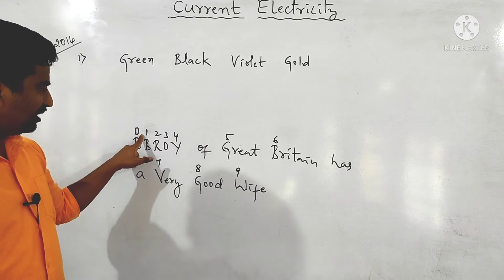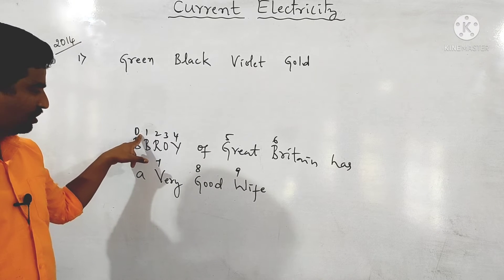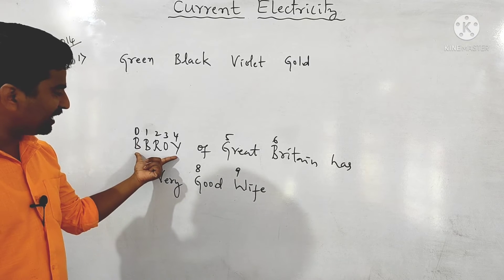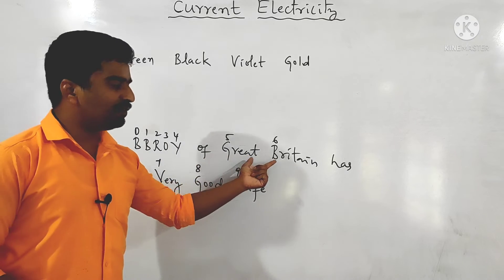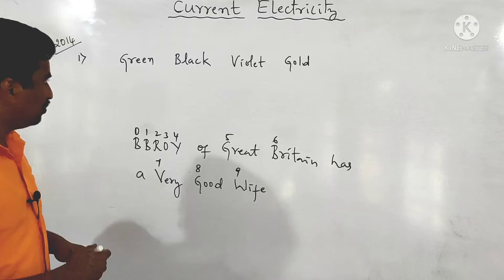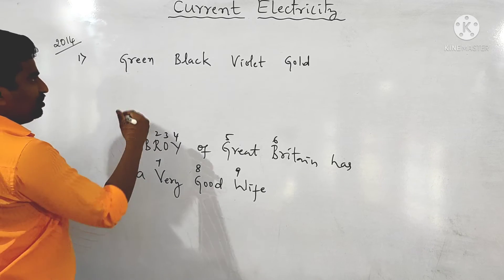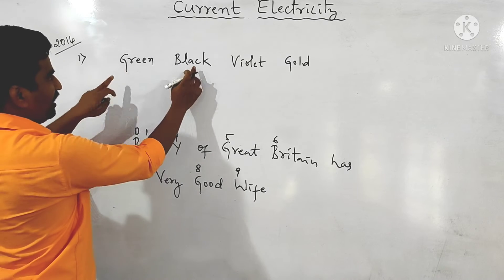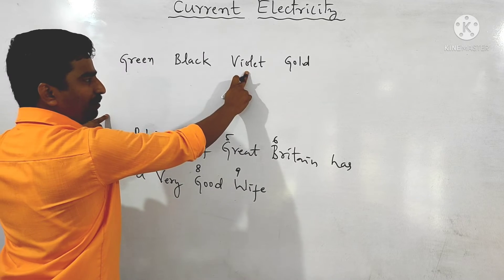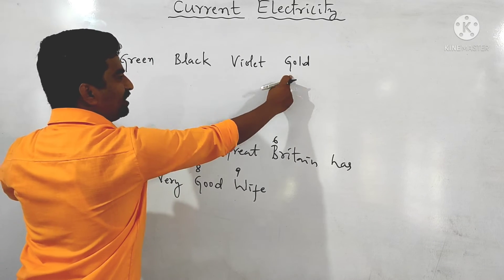The first two colors give the digits, the third color gives the multiplier, and the fourth color gives the tolerance. Green corresponds to 5, so the first digit is 5.